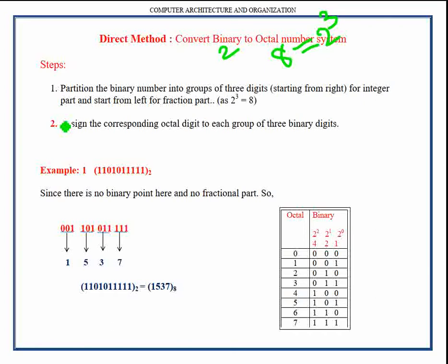After grouping the binary number into groups of three digits, we can assign the corresponding octal digit to each group of three binary digits.